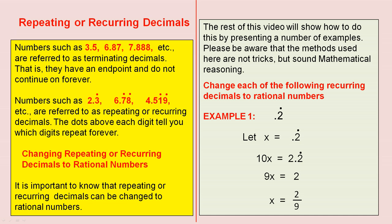Repeating or recurring decimals. Numbers such as 3.5, 6.87, 7.888 etc. are referred to as terminating decimals. That is, they have an end point and do not continue on forever.